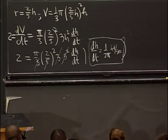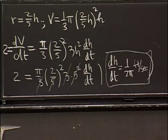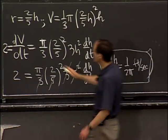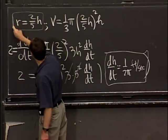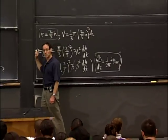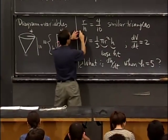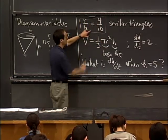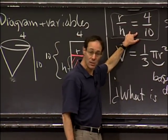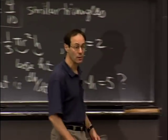Student question: where did r equals 2/5 h come from? The answer is it came from similar triangles — r divided by h equals 4 tenths, which simplifies to 2/5. Another student question: can you compute dV/dh separately and then use dV/dt equals dV/dh times dh/dt? Yes, absolutely — that's exactly what I did. That chunk is exactly dV/dh.